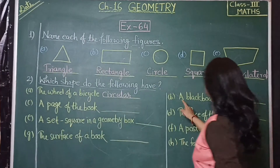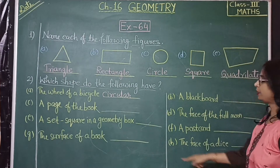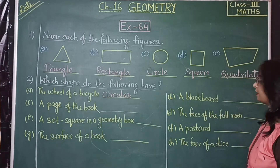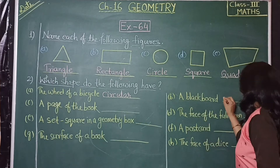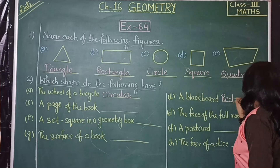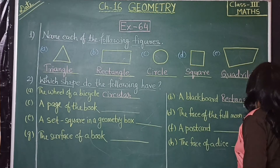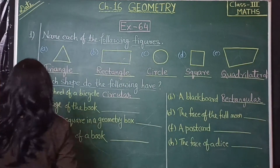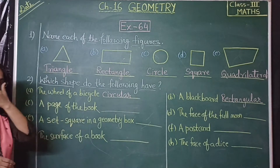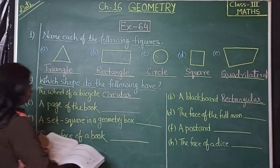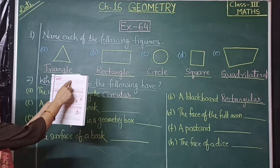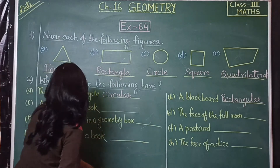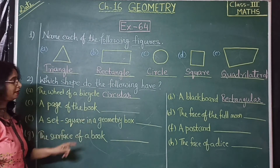Then we have a blackboard. What is the shape of the blackboard? Yes, it is a rectangle — so the blackboard is rectangular in shape. Now, a page of a book — this book's page is also rectangular in shape.